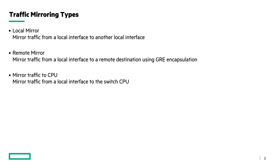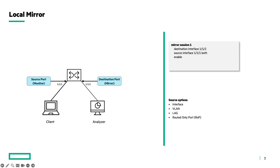Let's dive into the different traffic mirroring types. With the local mirror, we can mirror traffic from a local interface to another local interface. We have the source port, and on the source port, that is the traffic that we want to monitor.